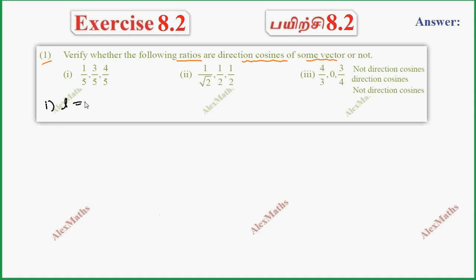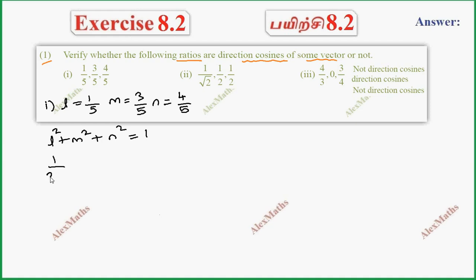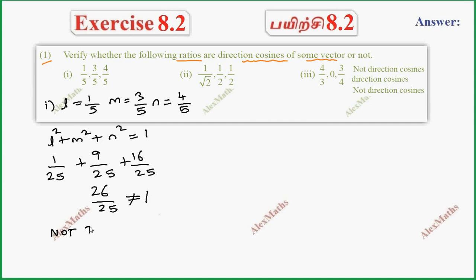So L is 1/5, M is 3/5, N is 4/5. The relation between direction cosines is L² + M² + N² = 1. This gives 1/25 + 9/25 + 16/25, which equals 26/25. This is not equal to 1, so this is not direction cosines.